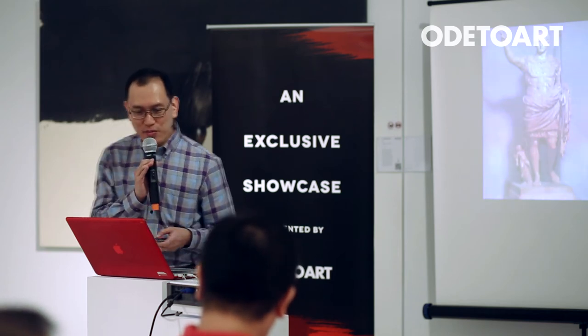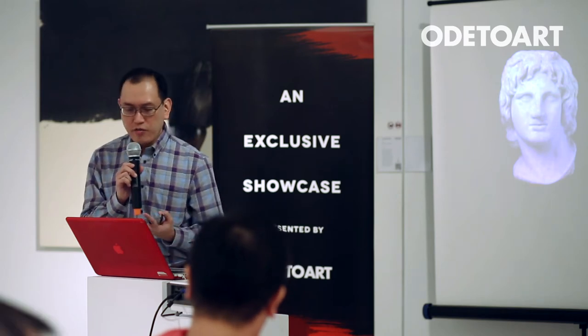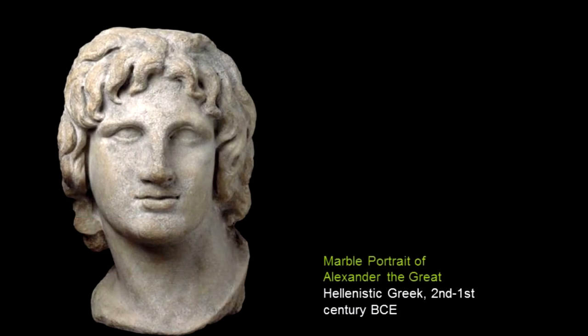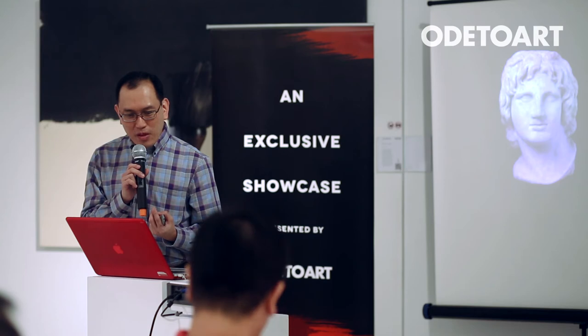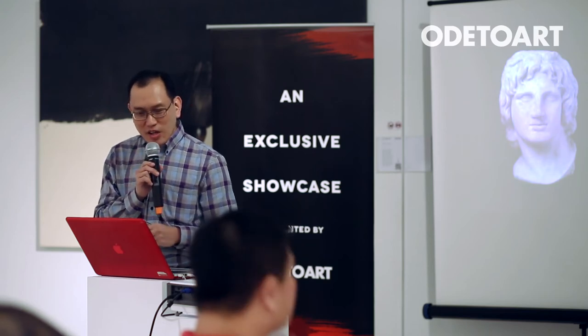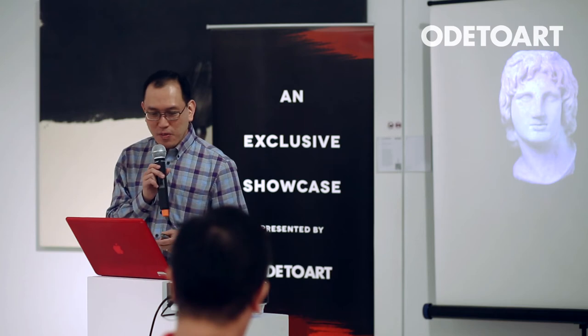Likewise, the surviving busts and portraits of Alexander the Great always show him at the prime of his life. The images of Alexander the Great broke away from the Greek convention of depicting sculptures of great men — he's shown without a beard, so he actually broke away from convention. This is an example of what you call an idealized image that shows Alexander with almost perfect features.